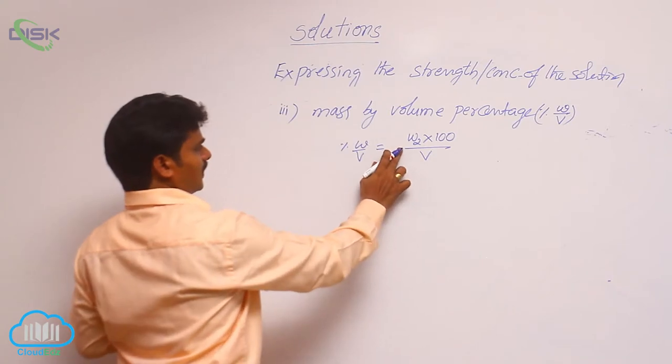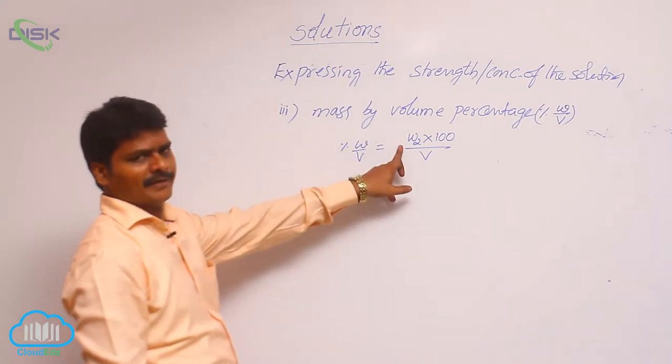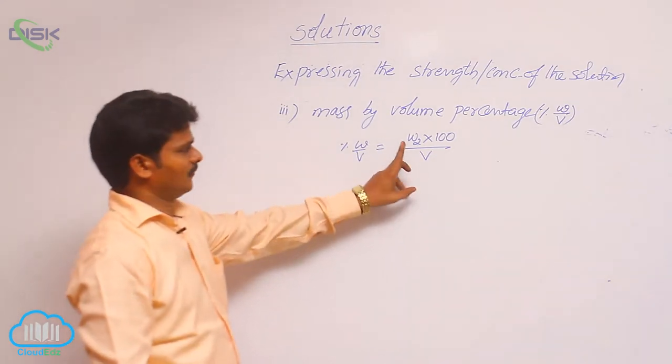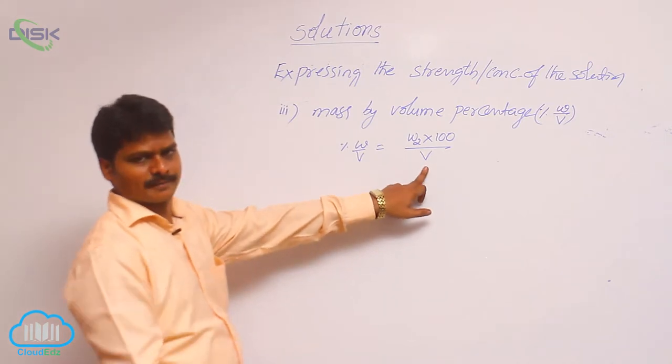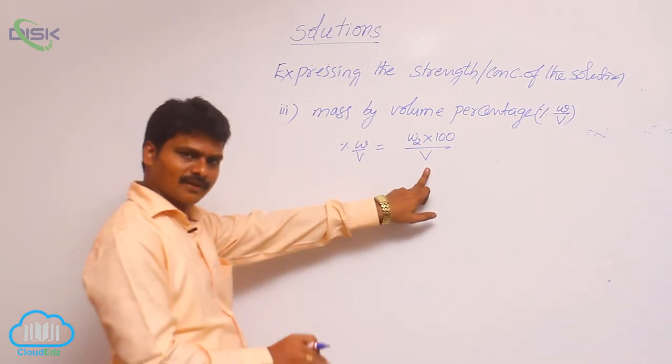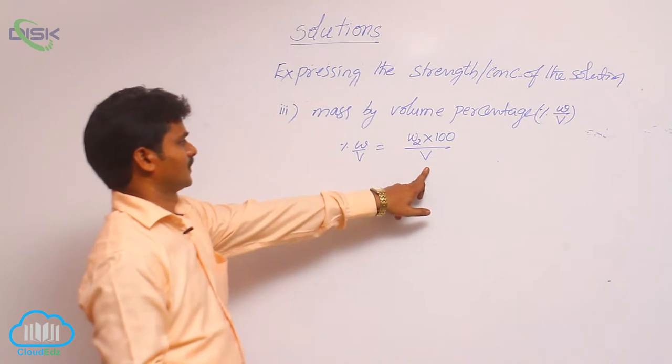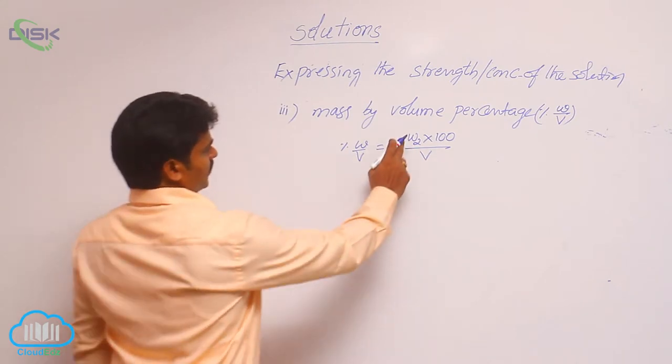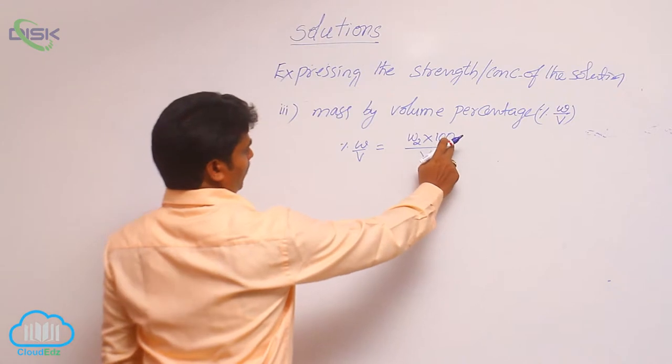What is W2? I already said that W2 is the weight of solute. V is the volume of solution, that means volume of solute plus volume of solvent. So now here weight by volume of solution into 100.